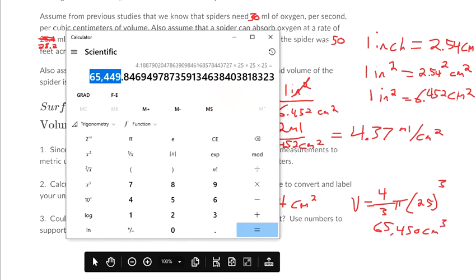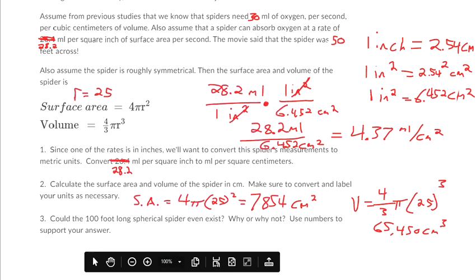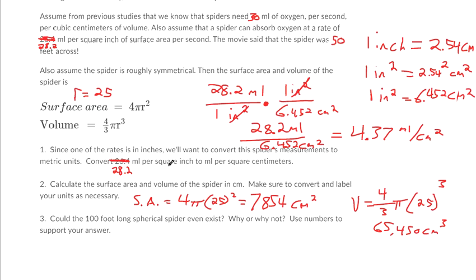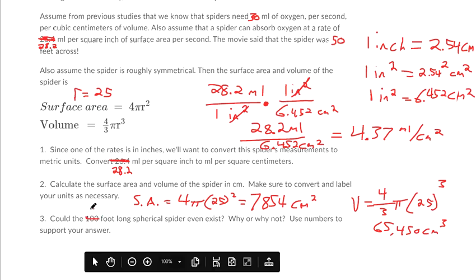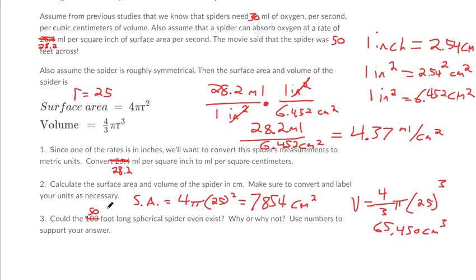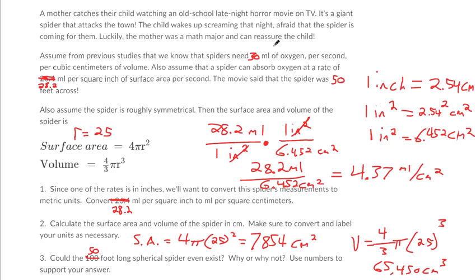So that's part two, we've got the surface area and volume. And then part three, mine is 50 feet long, I've calculated. Yours is going to be 100 feet long. So could my 50 foot long spherical spider even exist? Why or why not? That's where you come back to the top and use the numbers that you're given.